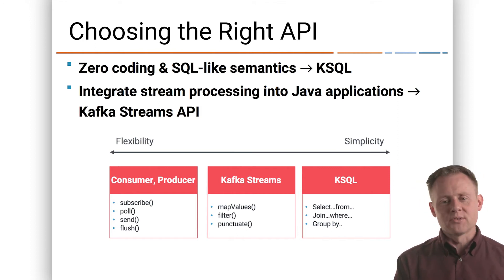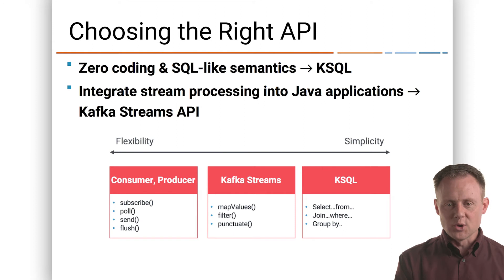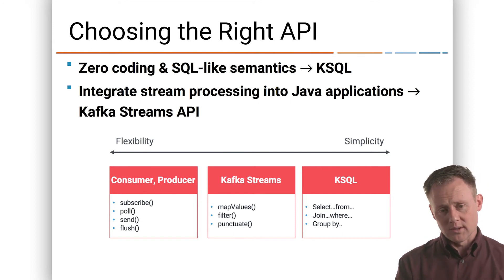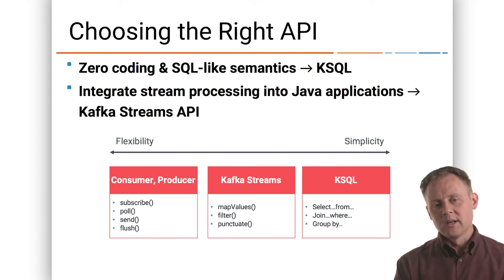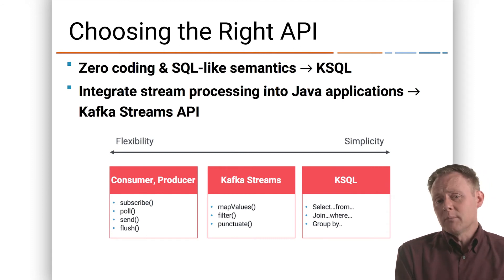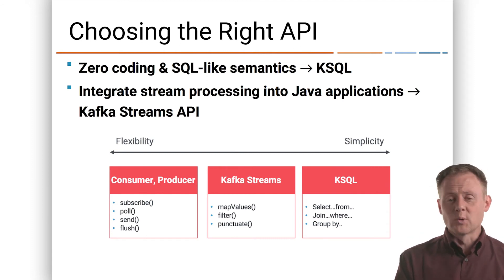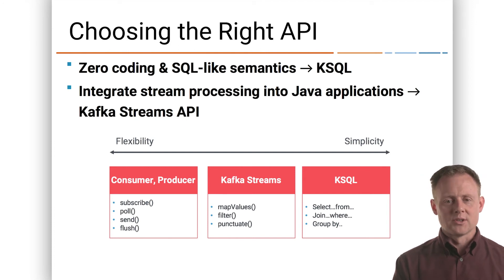Becoming even simpler up the stack is KSQL. It's a SQL-like language — you write a query that describes what you want the system to do, and it goes off and runs the query for you. It's by far the easiest to learn and use. Of course, we make trade-offs in flexibility as we move up the scale, but KSQL being SQL-like is going to be much easier to use than a Java API.